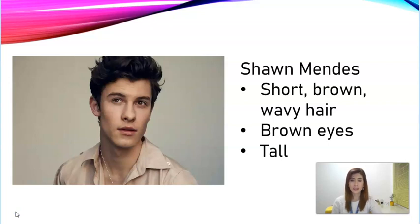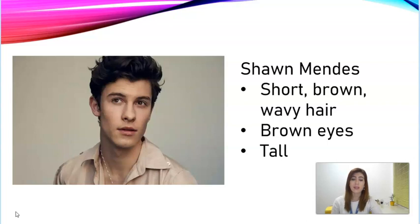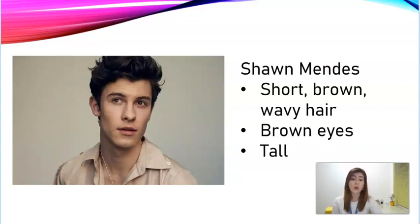Here we have another singer. He is Shawn Mangies. Do you know him? He has a lot of famous songs nowadays. Let's take a look at him and describe his appearance. He has short, brown and wavy hair. And he also has brown eyes — if you look at his eyes, you can see that he has brown eyes. And I think he is tall. So this was the description of Shawn Mangies.